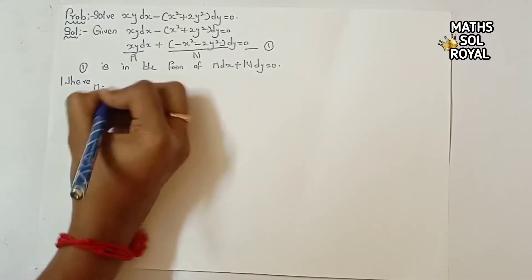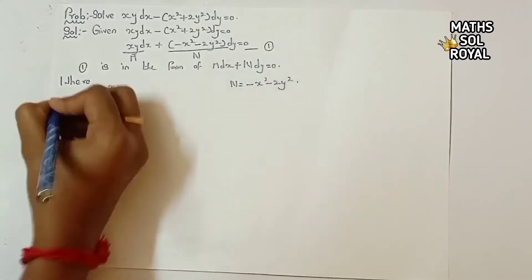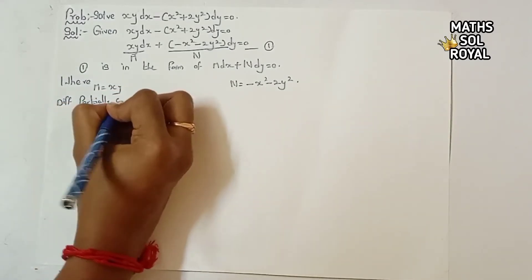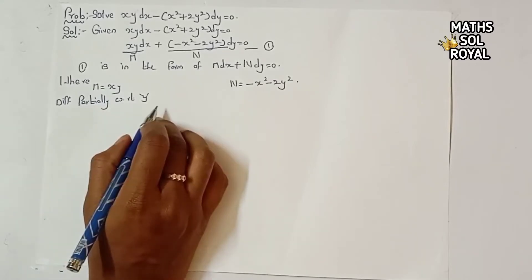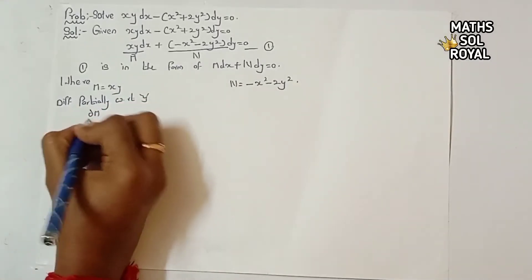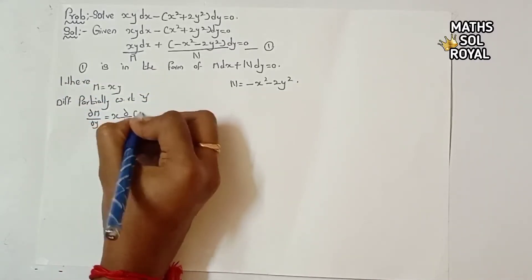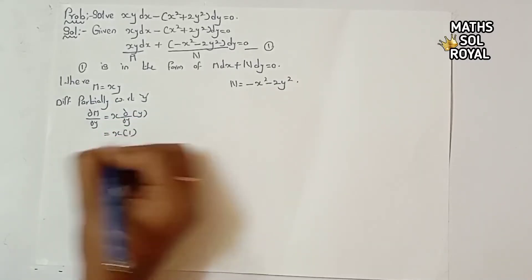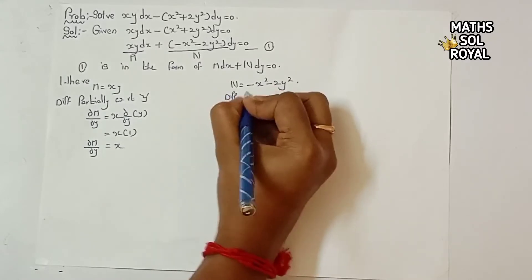Where M equals x·y and N equals minus x² minus 2y². Differentiating partially with respect to y — since we differentiate with respect to y, only y terms are partially differentiated and x is treated as constant. So ∂M/∂y equals x · (∂/∂y)(y) = x · 1 = x. This is ∂M/∂y.